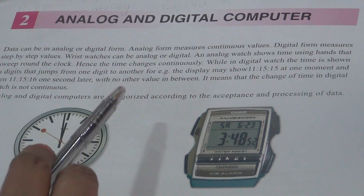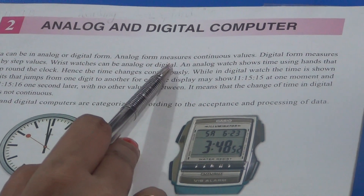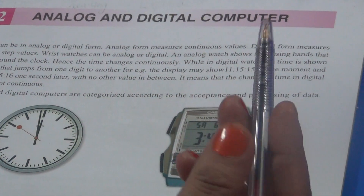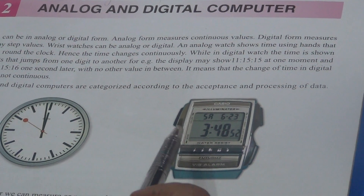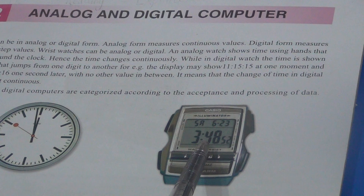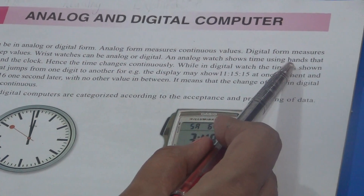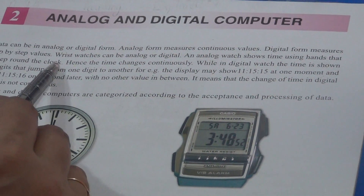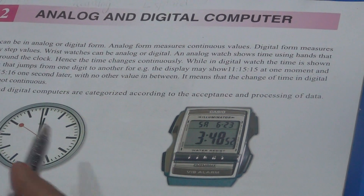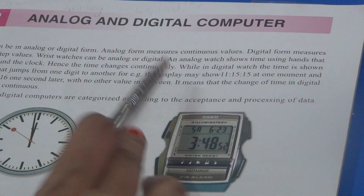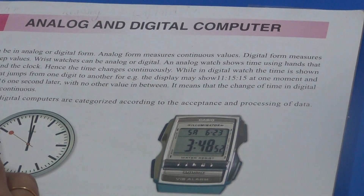Agar hum koi bhi cheez ko step by step measure karte hain, that is Digital form. Aur agar continuously uski value pata chale, that is Analog form. Wrist watches can be Analog or Digital. Aapne wrist watch dekhe honge — agar suiyon ki form mein hoti hai, that is Analog form. Lekin agar digits mein aa rahi hoti hai, to that is Digital form. An Analog watch shows time using hands that sweep round the clock, and the time change is continuous. While in a Digital watch, the time is shown in digits.